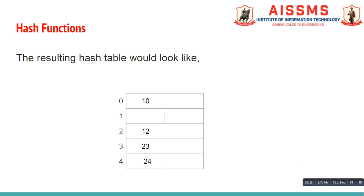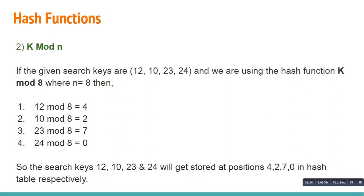The next function is k mod n. If the given search keys are 12, 10, 23, and 24, and we are using hash function k mod 8 where n equals 8 — note that in the case of k mod n, the value of n is given to us. Therefore 12 mod 8 returns 4, 10 mod 8 returns 2, 23 mod 8 returns 7, and 24 mod 8 returns 0. The search keys 12, 10, 23, and 24 will get stored at positions 4, 2, 7, and 0 in the hash table respectively, and the resulting hash table would look like this.